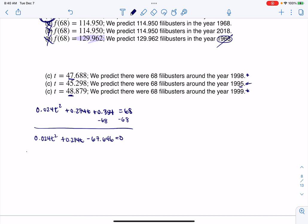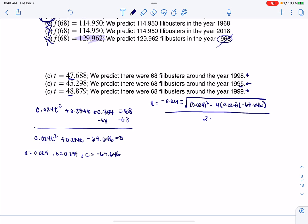There's my quadratic equation. My A value would be 0.024, my B value would be 0.274, and C would be negative 67.646. In this case, we would get that T was equal to negative B plus or minus the square root of B² minus 4AC, all over 2A. I pre-worked this out on my calculator just for time's sake, and the two T values you get are going to be 47.688 or negative 59.105.